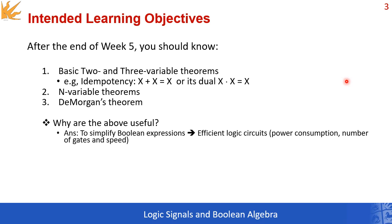After you finish this week's lecture, you'll be able to know the basic two, three-variable, and n-variable theorems, including DeMorgan's. Why are these useful? It's simple: by applying them on Boolean expressions, you simplify them, which means the equivalent circuits will be more efficient. They'll be smaller, meaning fewer gates, which brings lower power consumption and higher speed.